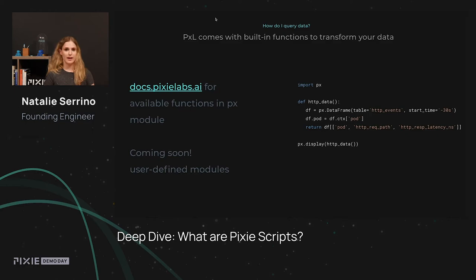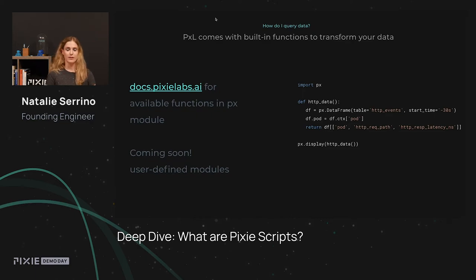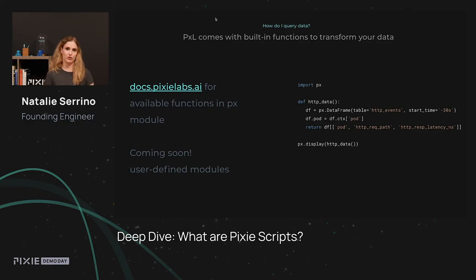If you want to find out about the available functions that Pixie ships with out of the box, you can check our docs to look at the available functions in the PX module, which is the main place we store functions. We'll have more coming soon — please let us know if there are functions you'd like to see. Also coming soon: we're built for developers by developers, so in the future you'll be able to define your own modules with your own functions, not just PX.